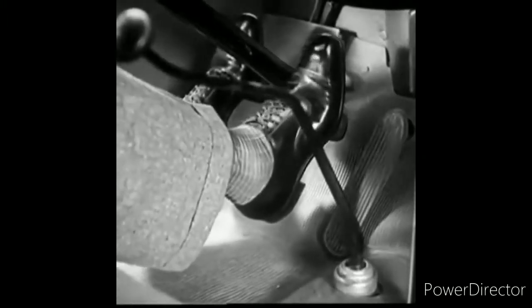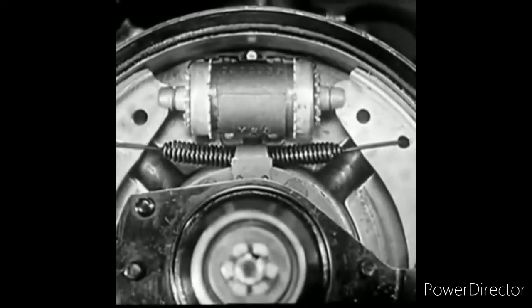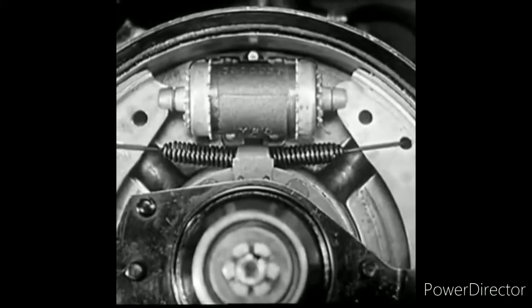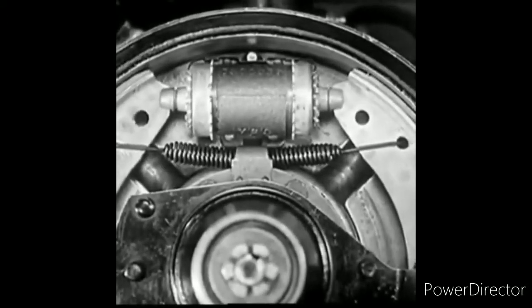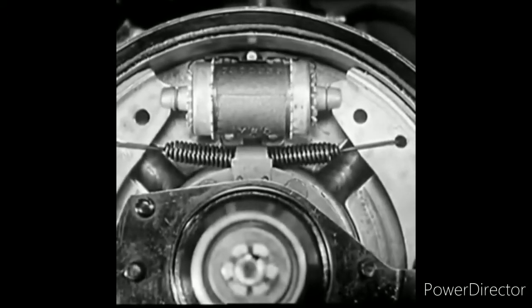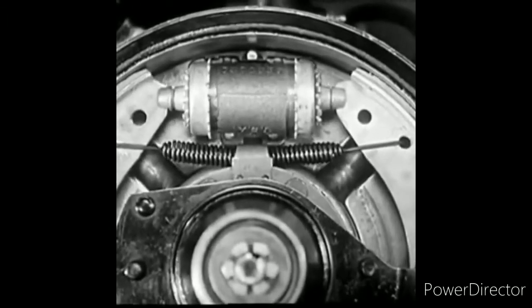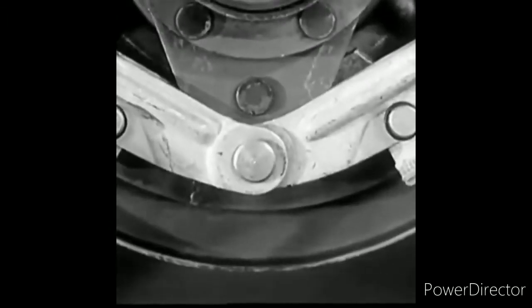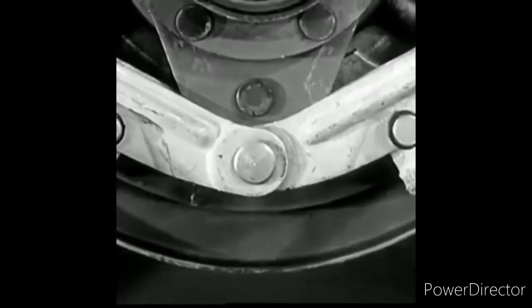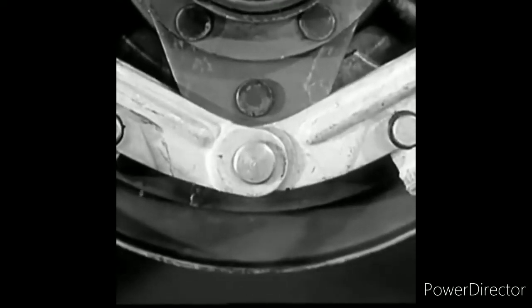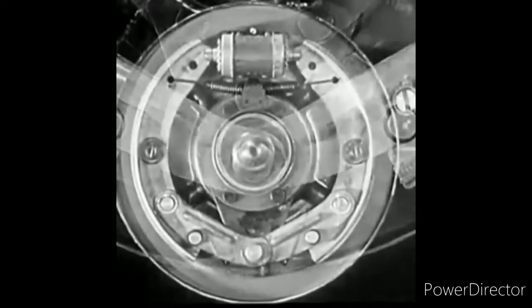When you press down on the brake pedal, each of the four power pistons is forced an equal distance against the brake shoes, pressing them uniformly against the brake drum. The shoes are hinged in such a way that the entire lining contacts the drum throughout the life of the car.